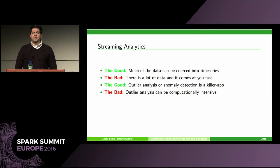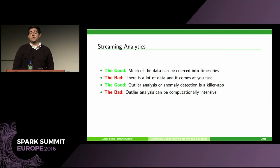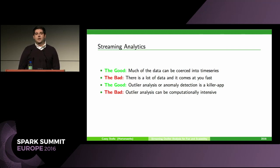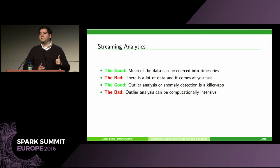Outlier analysis can be computationally intensive. Looking at research papers and blog posts, you start seeing things like autoencoders and robust PCA being discussed. Netflix did a really great blog post about using robust PCA for outlier analysis. Someone mentioned autoencoders being the future of outlier detection — I think that's probably true. But when streaming data is involved, if you put a computationally intensive piece in the middle of your pipeline, stuff starts to break.